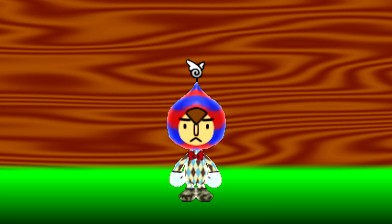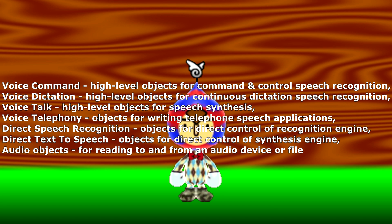The main components of Sappy 4.0, which were all available in C, COM, and ActiveX flavors, were: Voice Command — high-level objects for command and control speech recognition; Voice Dictation — high-level objects for continuous dictation speech recognition; Voice Talk — high-level objects for speech synthesis; Voice Telephony — objects for writing telephone speech applications; Direct Speech Recognition — objects for direct control of recognition engine; Direct Text-to-Speech — objects for direct control of synthesis engine; and Audio Objects — for reading to and from an audio device or file.